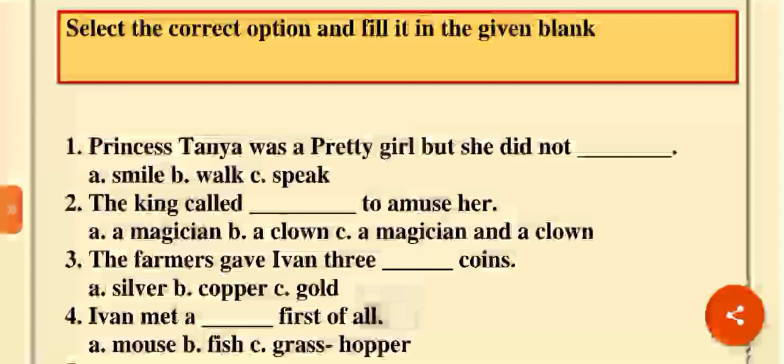Number 4. Ivan met a dash first of all. Jodho Ivan turan laggya, phir Ivan mho sab tho bila kwn miliya si? Mouse miliya si? Fish miliya si? Jhagra sopar miliya si? Miliya si? Kwni miliya si?